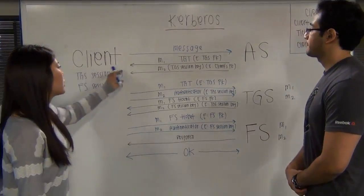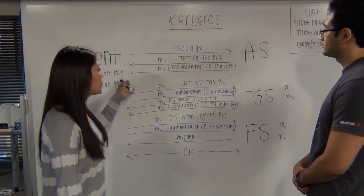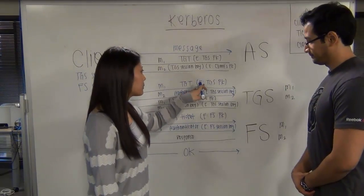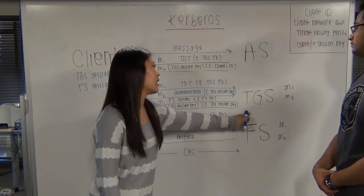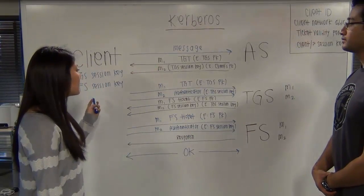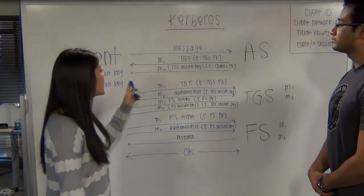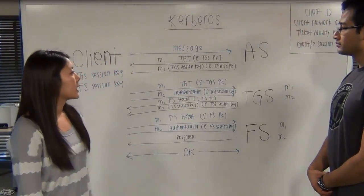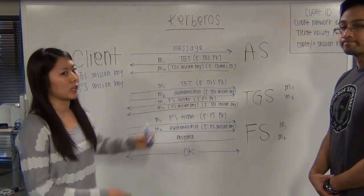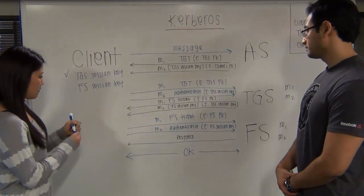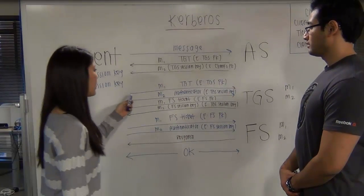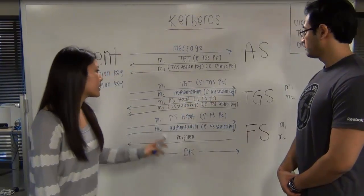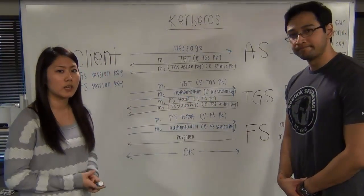Once the client receives those two messages, the client will forward the TGT — which is encrypted with the TGS private key — to the TGS. The client will then decrypt message two using the client's private key in order to obtain the TGS session key, and then forward the authenticator — which is encrypted with the TGS session key. The authenticator contains two things: the client ID and the timestamp.